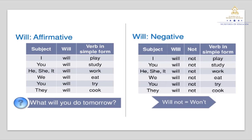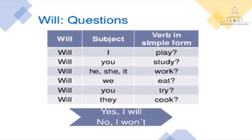Now it's time to move to the interrogative form. Do you see this chart? This is the interrogative form — or questions. In the interrogative form, we are asking about predictions, beliefs, or intentions about the future. The grammar structure is: will, plus subject, plus verb in simple form. Read with me: Will I play? Will you study? Will he, she, it work? Will we eat? Will you try? Will they cook?